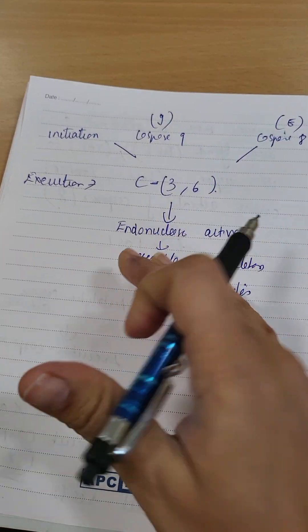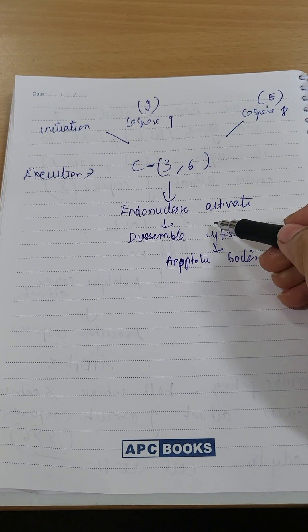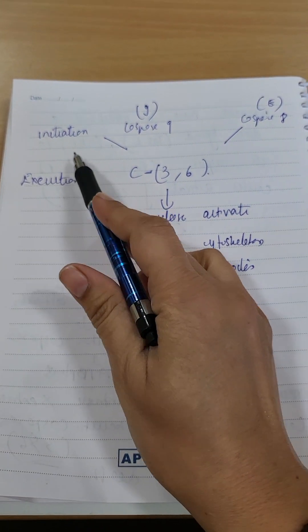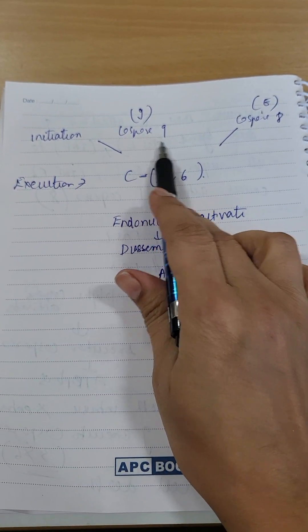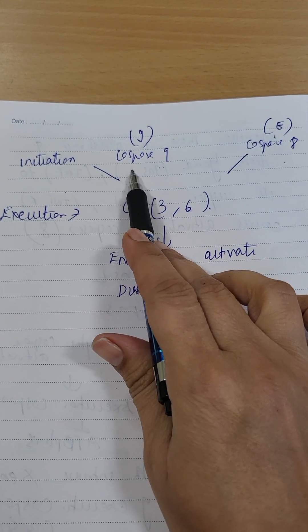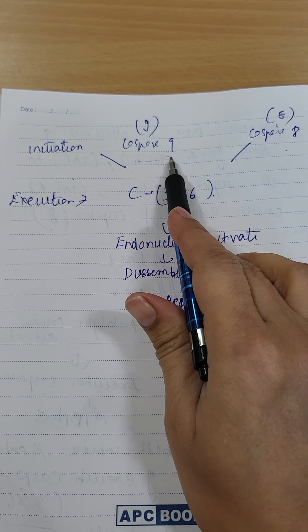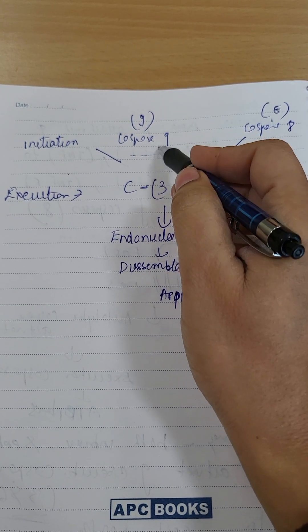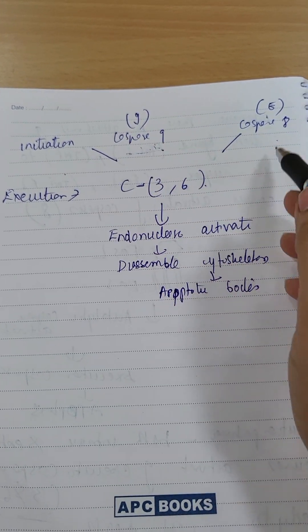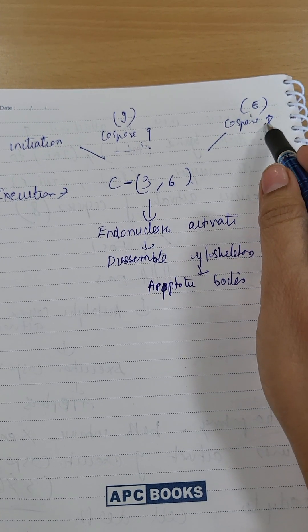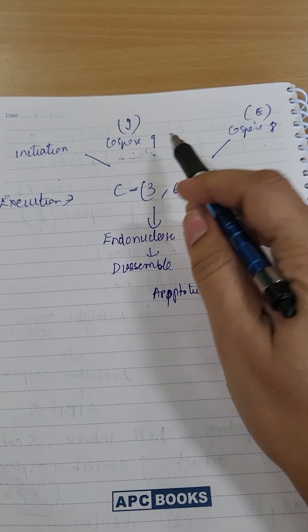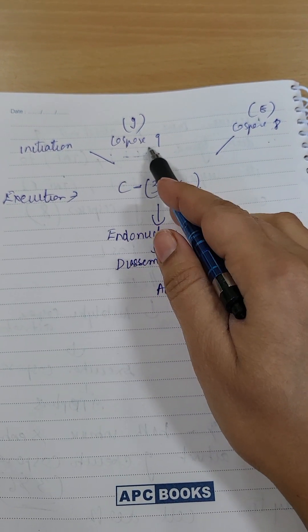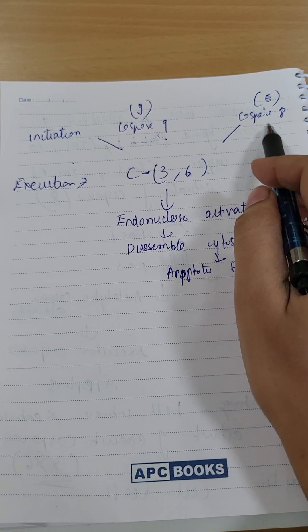Now the last part, we can summarize this. Initiation phase: intrinsic pathway activates caspase 9 (I for intrinsic), extrinsic pathway activates caspase 8 (8 for extrinsic, 8 starts from E).